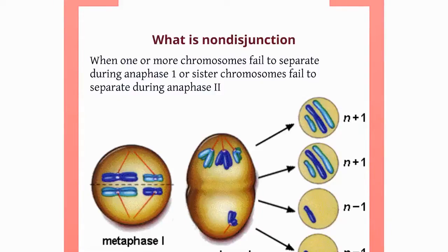So what is non-disjunction? Non-disjunction is when one or more chromosomes fail to separate. This can either happen during anaphase 1, or when sister chromosomes fail to separate during anaphase 2. In both anaphases — remember, that's the pulling apart stage — the homologous maternal and paternal chromosomes line up at the metaphase plate, and then the spindle fibers are supposed to pull them apart so that one of each homologous chromosome goes to each cell.